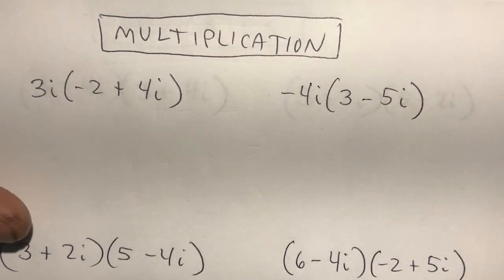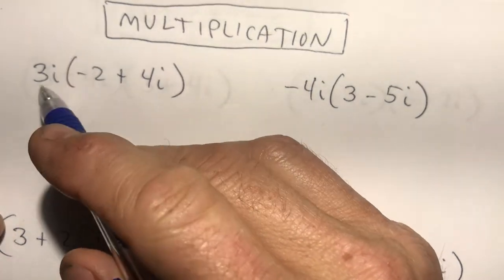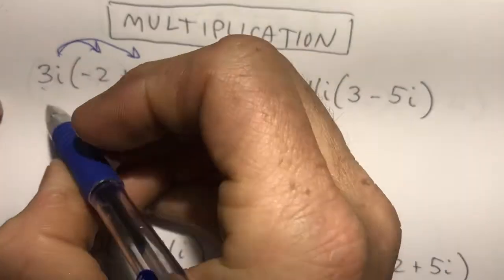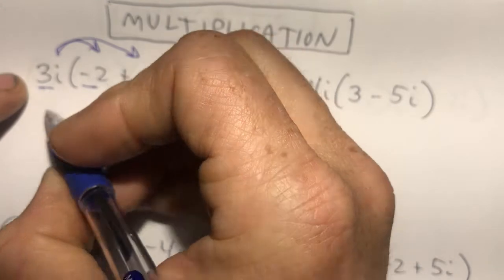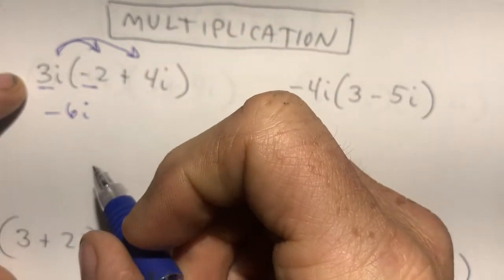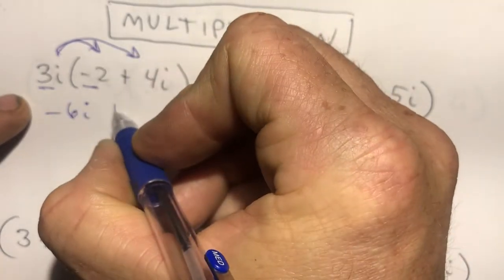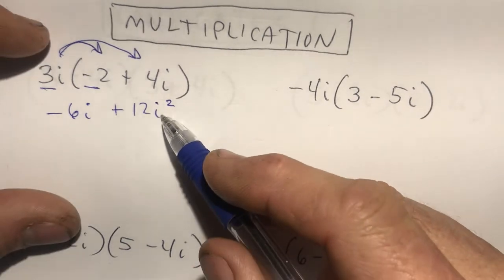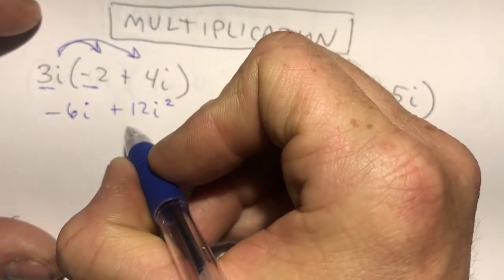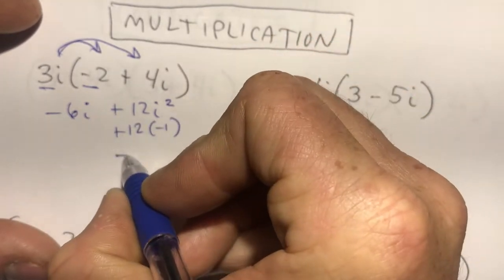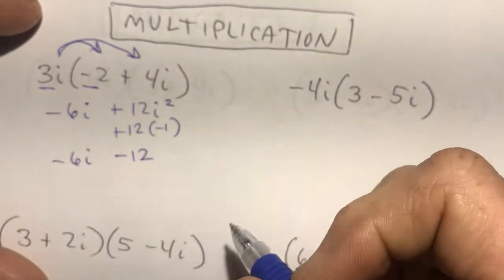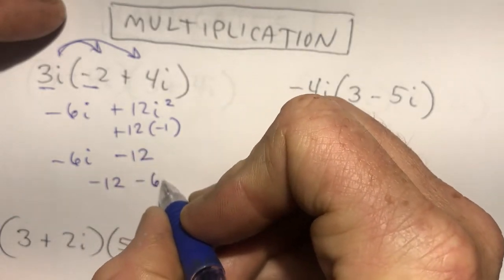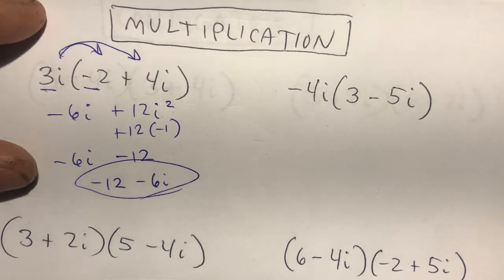For multiplication, in this example I distribute 3i into the expression. So 3i times negative 2 is negative 6i. Then 3i times positive 4i is positive 12i squared. Since i squared equals negative 1, this becomes positive 12 times negative 1, which is negative 12. I've got negative 6i minus 12. Putting the real part first gives negative 12 minus 6i.